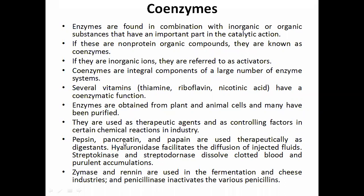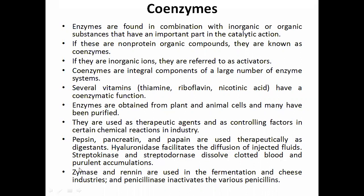Examples of therapeutic enzyme use: pepsin and pancreatin are digestive enzymes — pancreatin is obtained from the pancreas of different animals. Papain is used therapeutically as a digestant to initiate digestion of proteins, lipids, or carbohydrates. Hyaluronidase facilitates the diffusion of injected fluids. Streptokinase and streptodornase dissolve clotted blood and purulent accumulations. Rennin-type enzymes are used in fermentation and cheese industries, and penicillinase inactivates various penicillins.